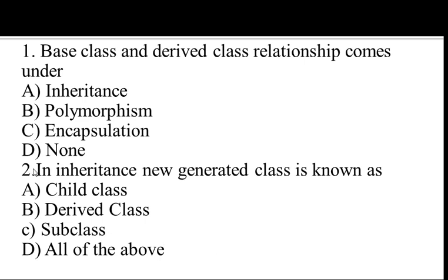Question number 2. In inheritance, the new generated class is known as — options are: A. Child class, B. Derived class, C. Subclass, D. All of the above. The answer is D, all of the above.